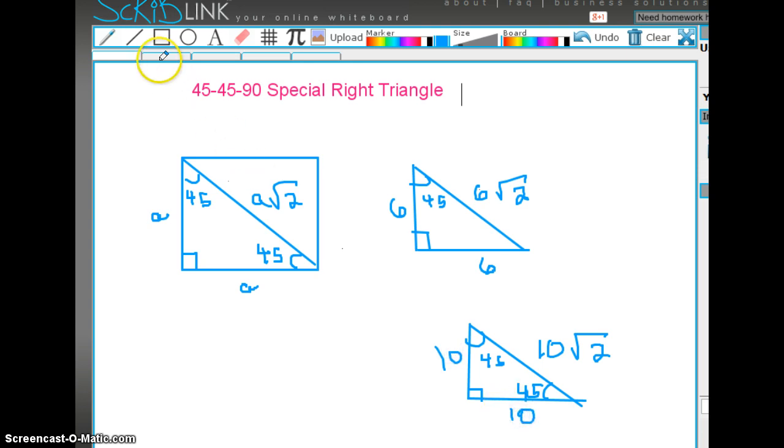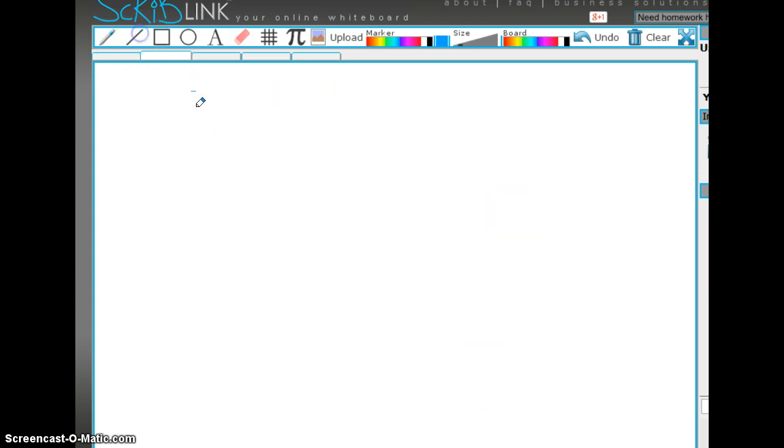Suppose we have a different type of problem. Say this was 10.8 units, and this is 45, and this is 45, and this is 90. Let's think about our formula and see if we can figure out how to solve this. The formula says that one side is A, this side is A, and this side is A square root of 2.